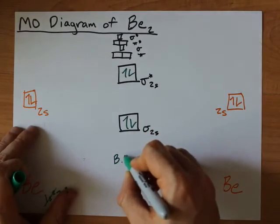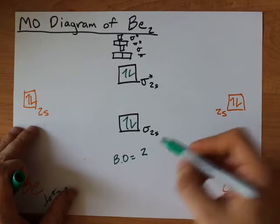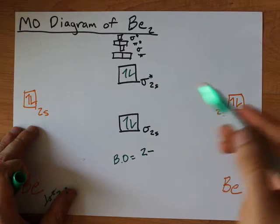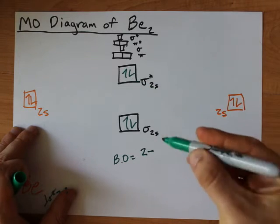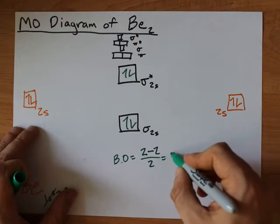Alright, the bond order here is number of electrons in bonding orbitals, that's two, minus number of electrons in antibonding orbitals, that's also two, and then we cut that answer in half which gives me zero over two or zero.